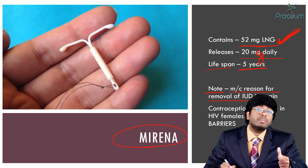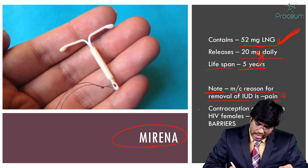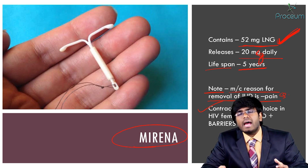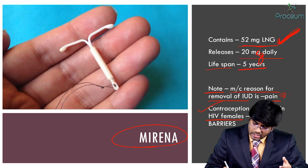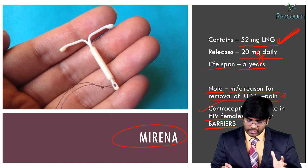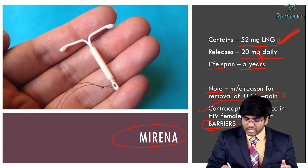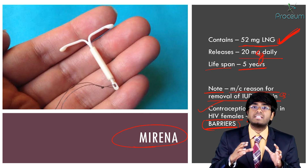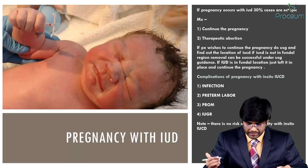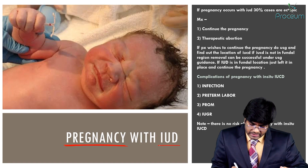The most common symptom with IUDs is bleeding, but the most common reason for IUD removal is pain. Regarding contraception in HIV-positive females: the contraceptive of choice is a combination of intrauterine contraceptive devices plus barrier methods — IUDs to prevent pregnancy, and barriers to prevent transmission of HIV and other STDs.